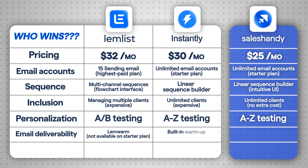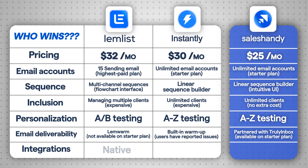For email deliverability, Lemlist integrates with their own warm-up tool, Lemwarm, but it is not available on the starter plan. Instantly has a built-in warm-up, but some users have reported issues. To resolve this, Sales Handy has partnered with a trusted tool called Truly Inbox for email warm-up, which is available even on their starter plan. Finally, let's talk about integrations. Lemlist offers more native integrations, while Instantly is a bit limited in this area. Sales Handy, on the other hand, offers the best native integrations with popular CRMs like Salesforce and HubSpot.